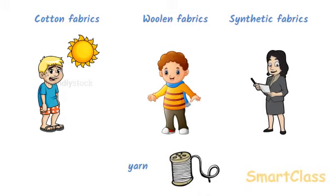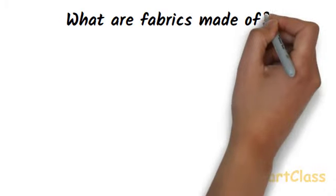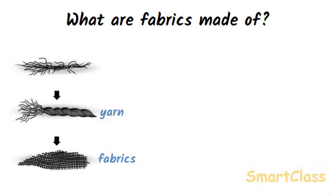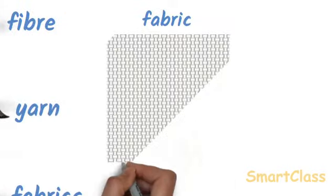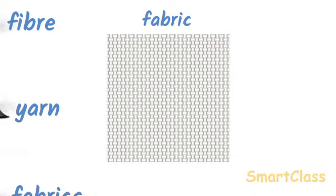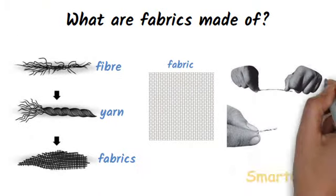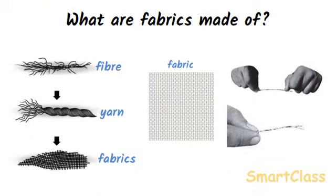Yarn is a spun thread which is used for weaving or knitting fabrics. Fabrics are made of yarns, which are in turn made from fibers. If we look at a piece of fabric closely, we will find that it is made of a network of threads or yarns along the length and breadth of the fabric at right angles to one another. If we take out a yarn from a piece of cotton fabric, press one end with a thumb and scratch the other end, we will find that the cotton yarn splits into thin strands called fibers.